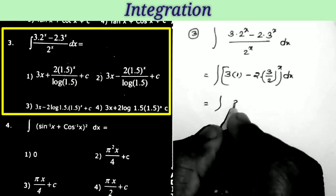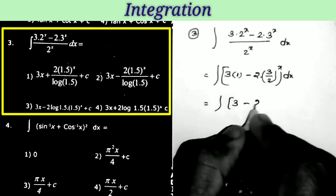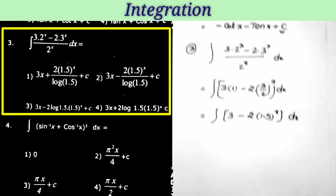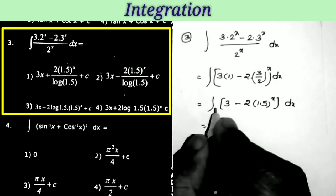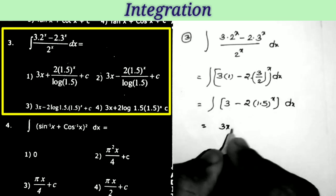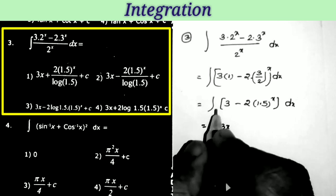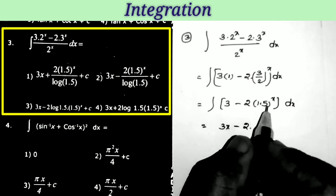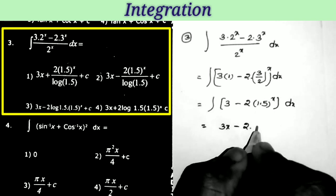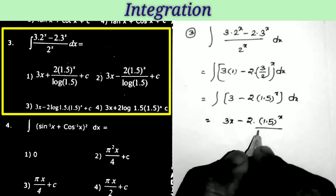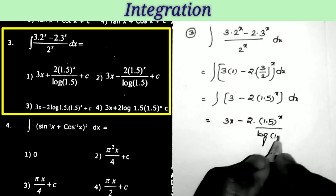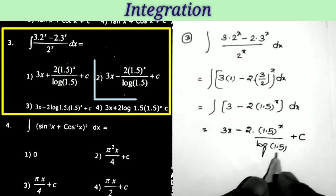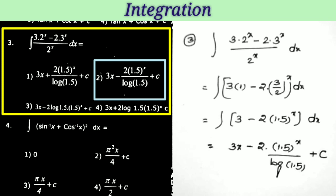This equals integral of (3 − 2·(1.5)^x) dx. Now doing the integrations: integral of 3 dx = 3x. For the second term: integral of a^x = a^x / log a. So this is 2 · (1.5^x / log 1.5). The answer is 3x − 2·(1.5^x / log 1.5) + c, which is the second option.